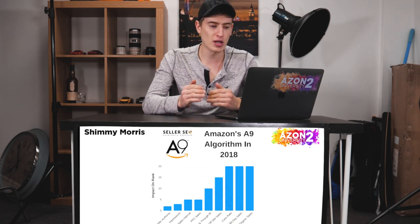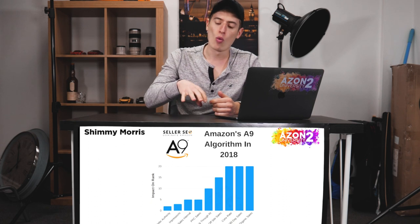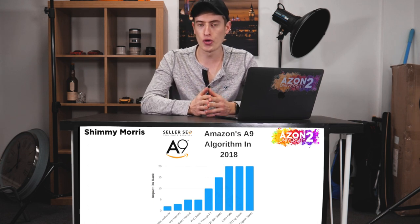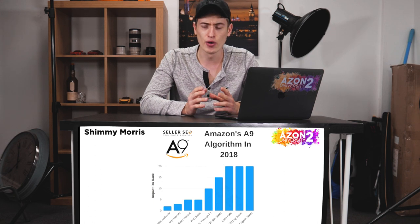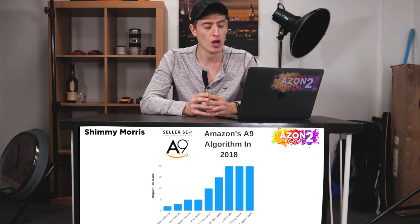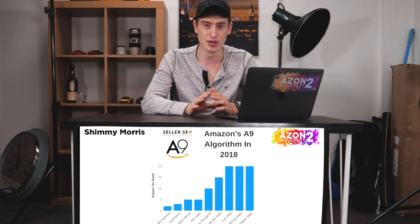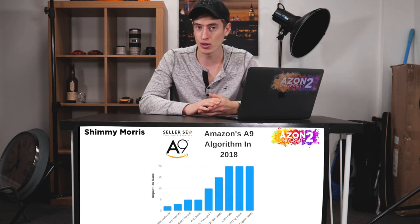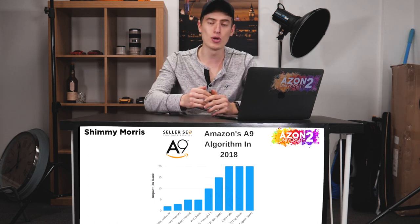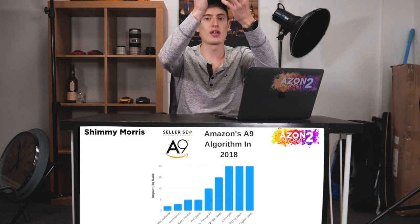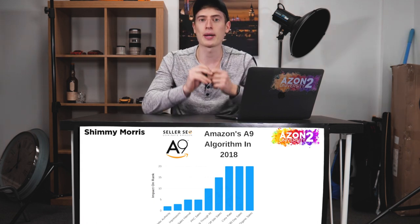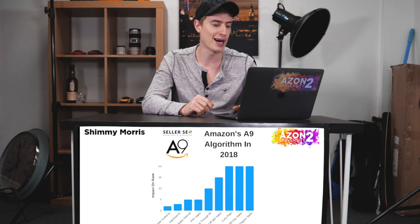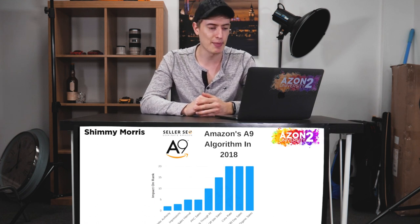Click-through rate is the percentage of people who, after searching your product on Amazon and seeing all the listings, click through to yours. The best way to increase your click-through rate is to have your first image stand out as much as possible. Look at what everyone else is doing and do something completely different — you want to avoid banner blindness, where shoppers are just scrolling through and all images look the same.